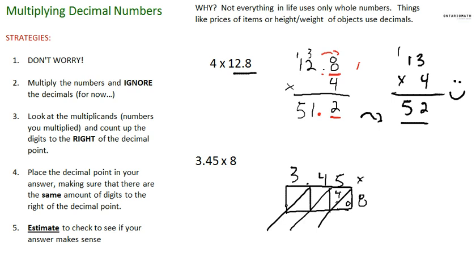4 times 8 is 32. 3 times 8 is 24. So 0, 6, 3 plus 4, 7, 2. My answer is not 2760. That's way too big. It's only 3.45 times 8. I have to figure out where the decimal spot goes.